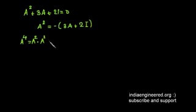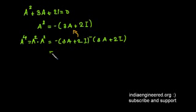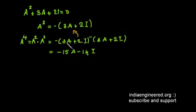Next we find A power 4, which equals A squared times A squared — that is, (minus 3A plus 2I) times (minus 3A plus 2I). Expanding this produces an A squared term, which we substitute using our earlier expression. After substitution, A power 4 equals minus 15A minus 14I.